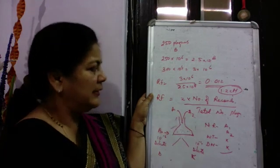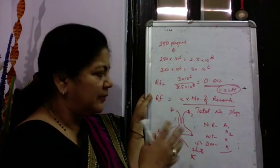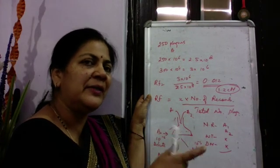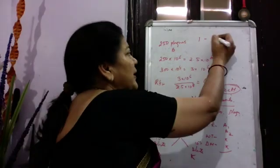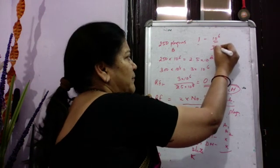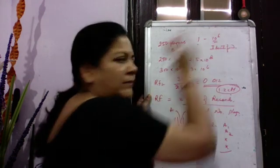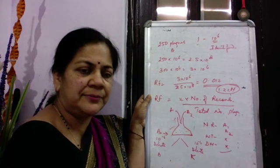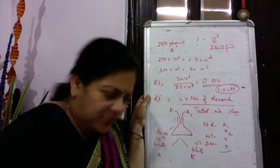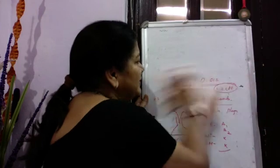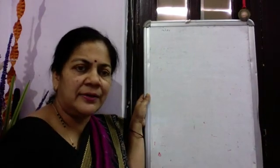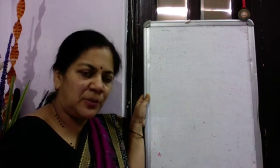The beauty of this technique is its extraordinary sensitivity — even if recombination occurs in only 1 in 10⁶ phages, it can still be identified. This concludes the discussion on recombination frequency analysis. In the next part, the topic of deletion mapping will be covered.